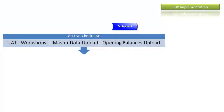In the Deployment phase, user acceptance test workshops are conducted. Each process owner tests each transaction, each business scenario, and the exceptions that were covered in the Analysis and Design phases. In most cases we will not cover all cases, and after go-live we have to expect some business exceptions that need to be revisited and redesigned, or that require some modifications in business processes.